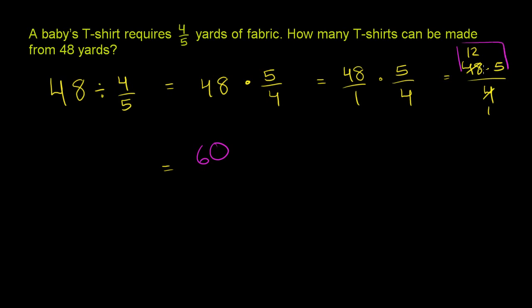12 times 5, which is equal to 60 over 1, which is the exact same thing as 60. So you can actually make 60 children's or baby's T-shirts from 48 yards if each of them use four-fifths of a yard.